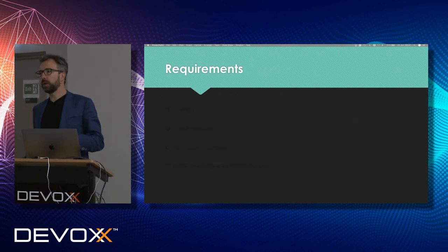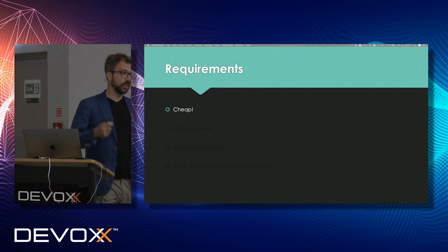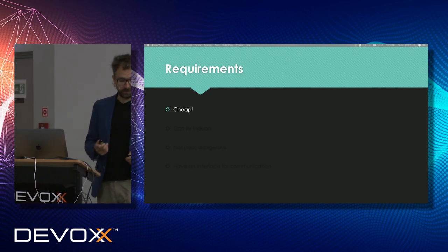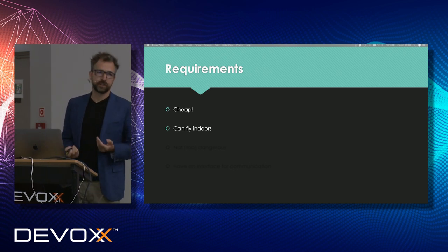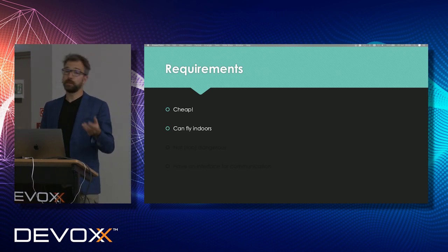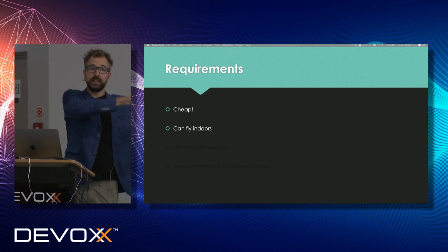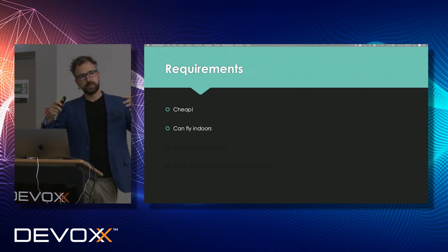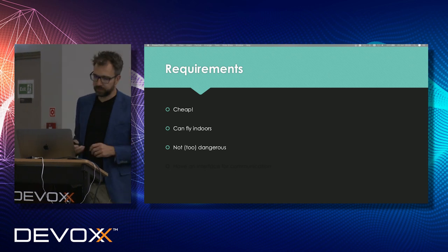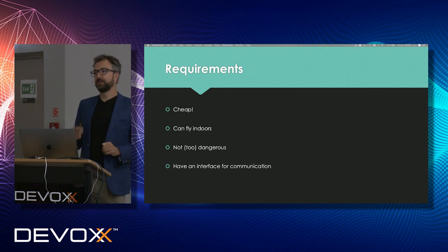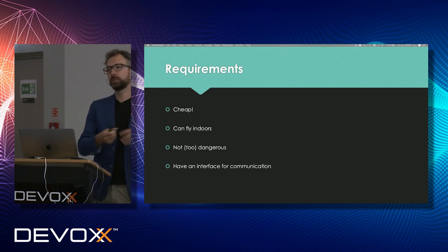So let's talk about the requirements for doing what we want to do. First of all, they need to be cheap — if you start experimenting, you start crashing a lot, and you don't want to throw away 2,000 euros every time. I personally want them to fly indoors, because this takes a lot of time. I'm from Amsterdam — we don't have a lot of nice weather, two days of summer every year — so we want to sit inside and be comfortable. Also there's less wind inside; it's a more predictable environment. They shouldn't be too dangerous, and of course they should have a computer interface for communication.